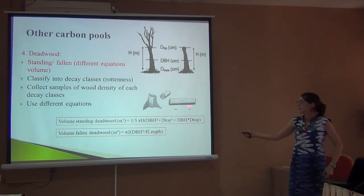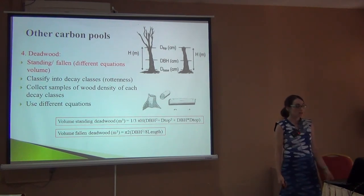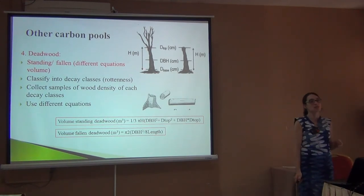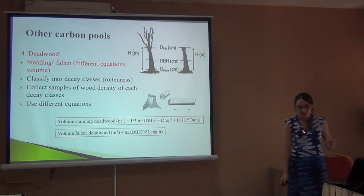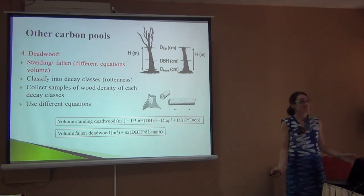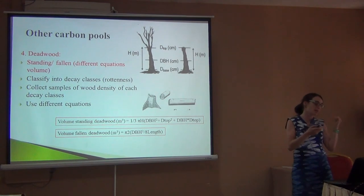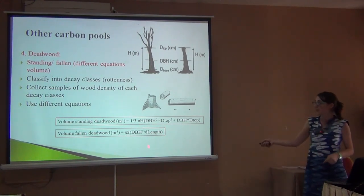When deadwood is lying down, we use another equation that is more like a cylinder, measuring mostly the bigger part. In the field you measure the height and diameter and classify it by rot level. This is pretty funny — people always think scientists are super precise, but for deadwood we use the kicking technique: you kick it, and if you hurt yourself it's class one — very hard; if it moves a little it's slightly rotten; if it falls apart it's very rotten. You collect samples of each category, dry and weigh them in the lab to relate the density, and then use the different equations to estimate the biomass.